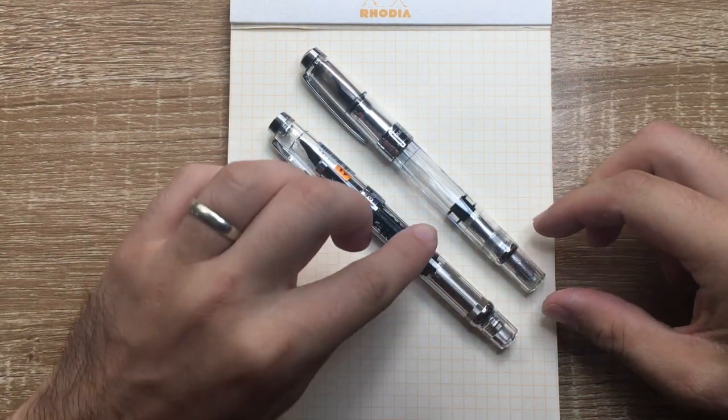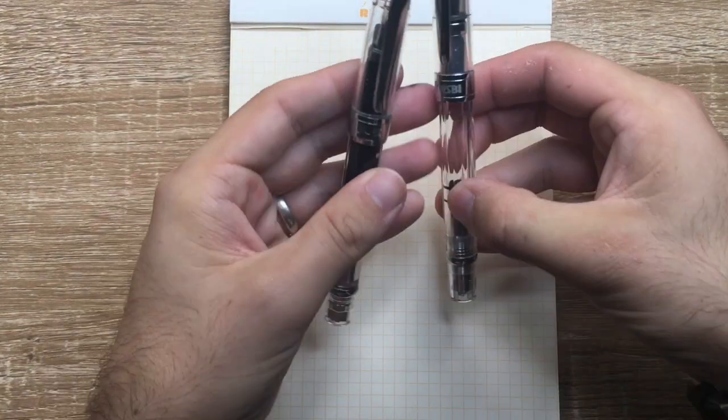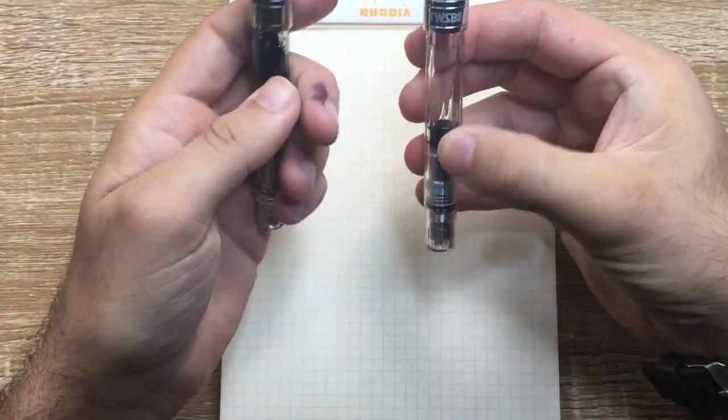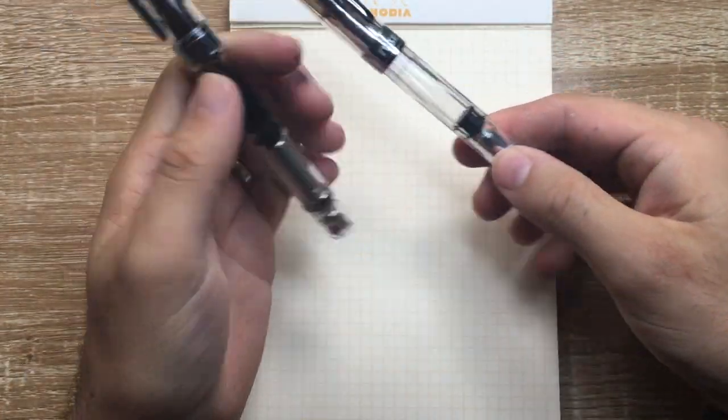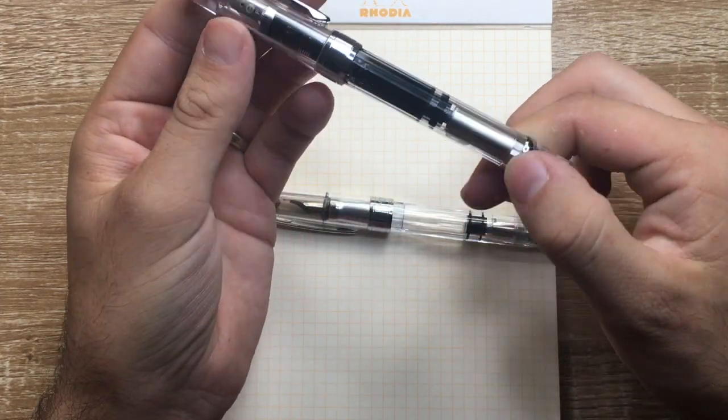Demonstrators, piston fillers with a nice metal band around at the end of the knob there, similar cap bands, similar clips, similar general shape. The Diamond 580 has these diamond facets, the 3008 straight plain facets.